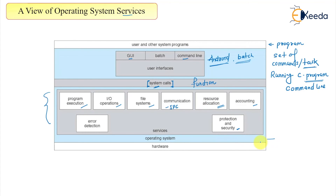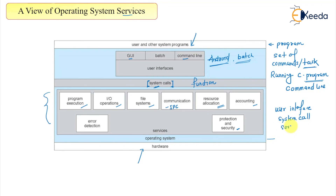Now if you look at this layer, we have the entire operating system. There is a user system program on one part and hardware on another part. In between, what we have can be summarized as: user interface, system calls, and the different services. These three things together combine to form your operating system.